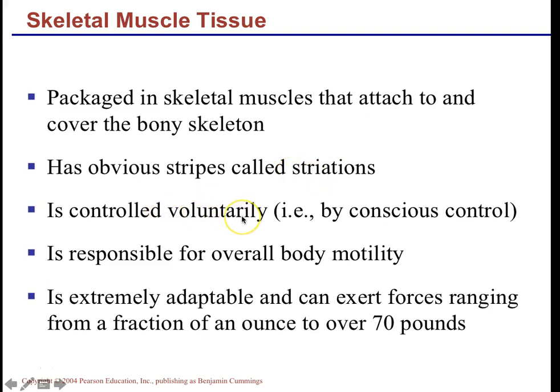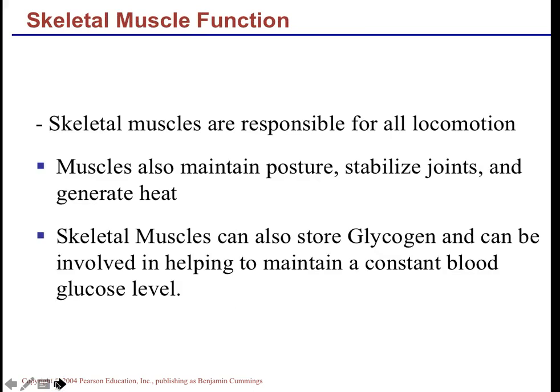Skeletal muscles are voluntary, meaning they are under conscious control. They are responsible for body motility and can exert forces from very small to very large — from a fraction of an ounce to over 70 pounds. Note that smooth muscles and cardiac muscles will be covered in A&P Two; for A&P One we're zeroing in on skeletal muscle function.